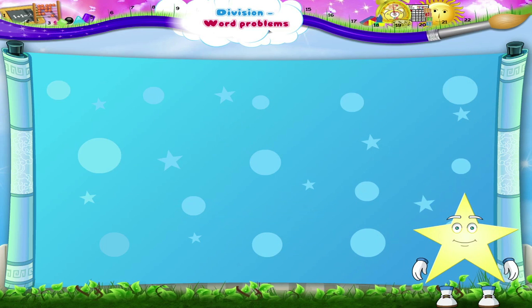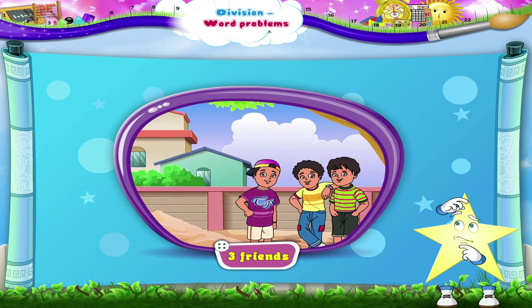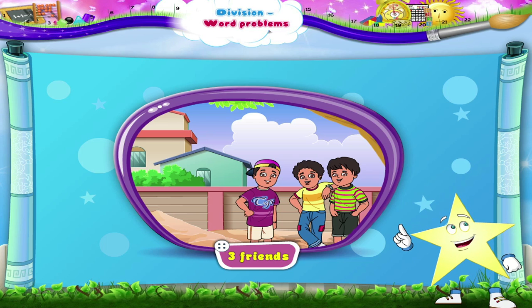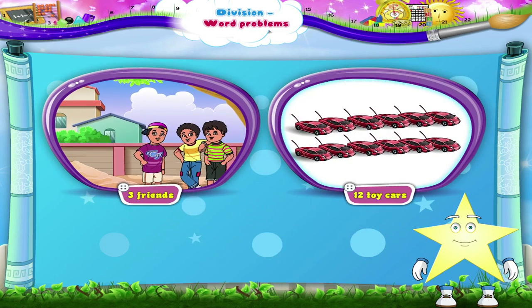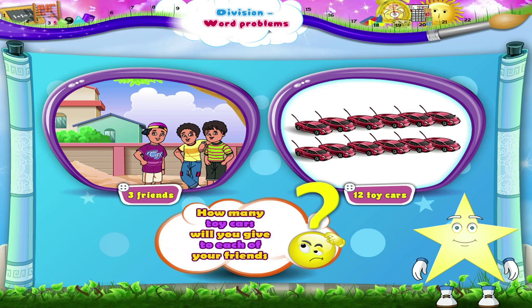Here is the last word problem for you Starry. How many friends are coming to play with you Starry? Ok, 3 friends. Suppose I give you 12 toy cars to be distributed equally amongst your friends. How many toy cars will you give to each of your friends Starry?